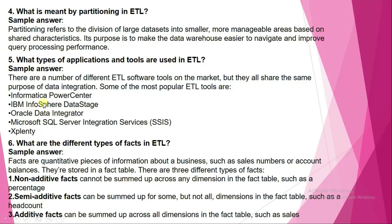What are the different types of facts in ETL? Facts are quantitative pieces of information about a business, such as sales numbers or account balances, stored in a fact table. There are three different types: non-additive facts, which cannot be summed up across any dimension, such as a percentage; semi-additive facts, which can be summed up for some but not all dimensions, such as a headcount; and additive facts, which can be summed up across all dimensions, such as sales.